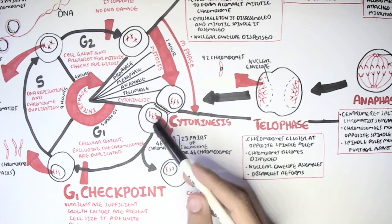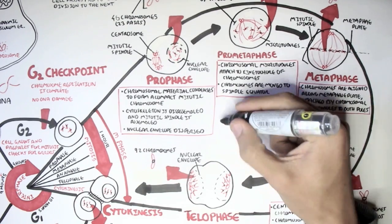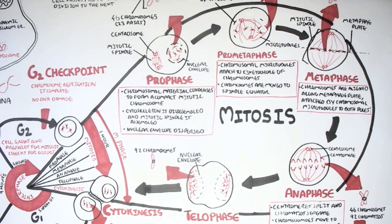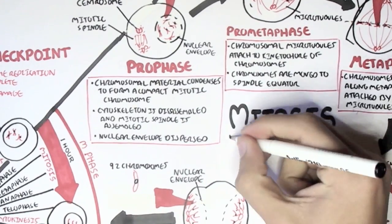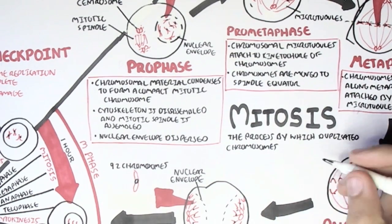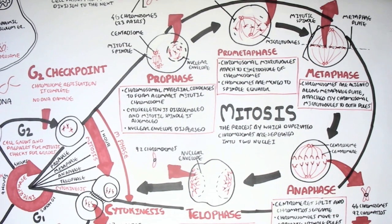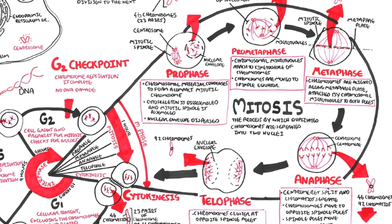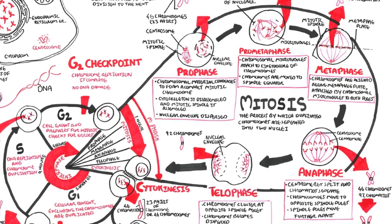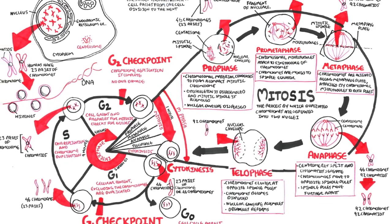Following cytokinesis, these cells can enter the cell arrest phase, or they can enter the interphase and then enter mitosis again after some time. Mitosis can be defined as the process by which duplicated chromosomes separate into two nuclei, and this is essentially the division process. Hope you enjoyed this video on the cell cycle — we looked at the interphase and mitosis in quite detail. It's important to know the number of chromosomes and chromatids in each of these steps to understand what is actually happening. Thank you.